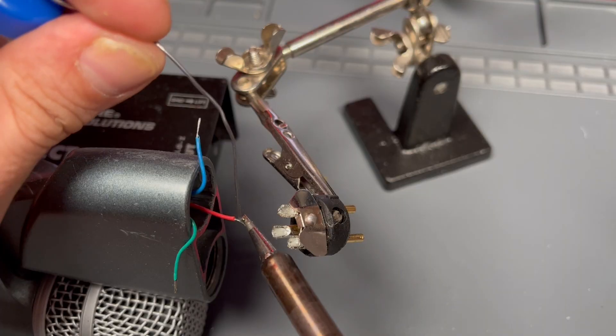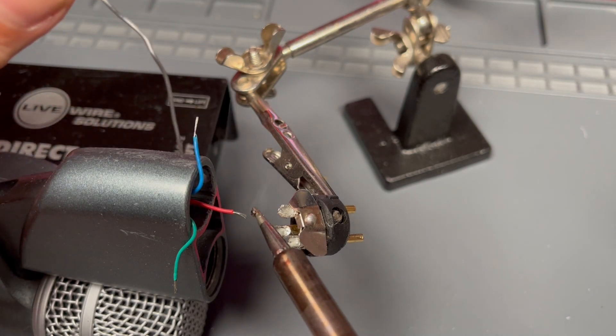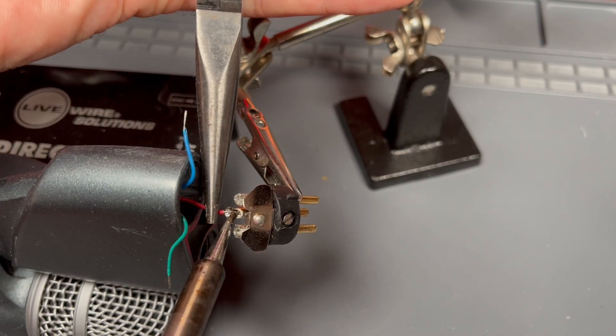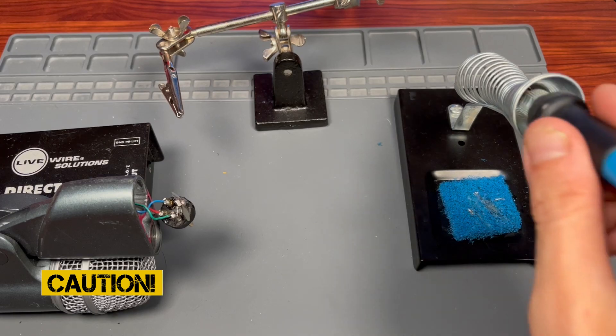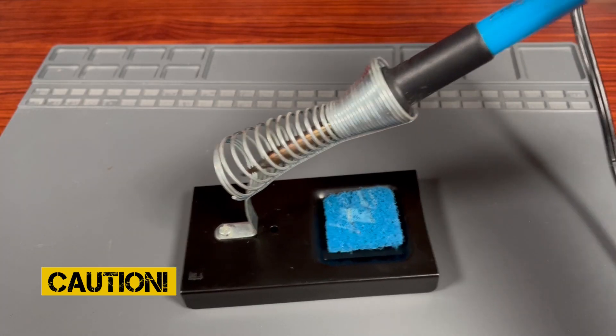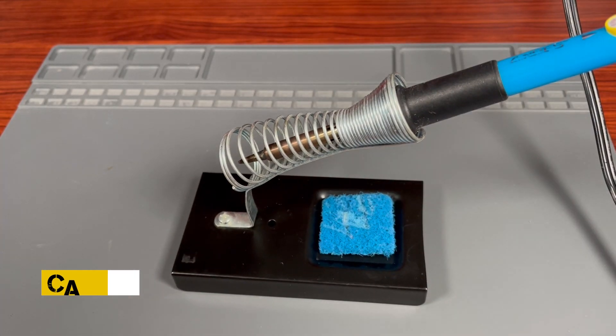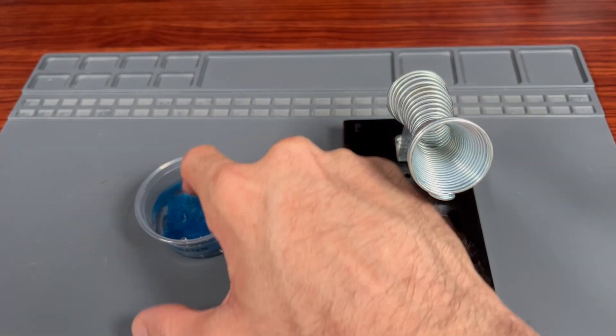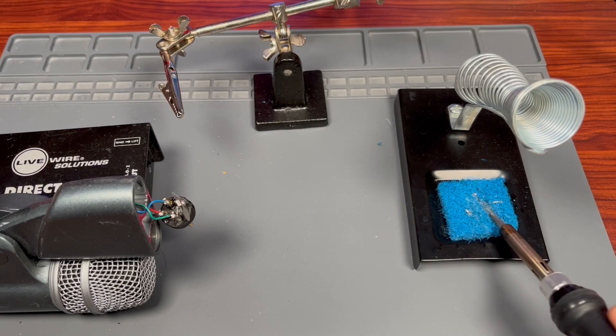The soldering iron has a heated tip that melts the solder and allows us to join those wire connections with ease. Keep the iron in the holder when not in use and avoid touching any metal areas. It'll be hot. Also, keep a wet sponge to clean leftover solder from the iron tip.